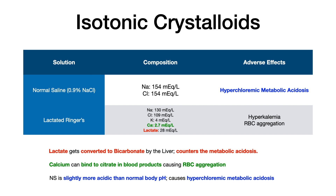In lactated ringers, the lactate actually gets converted to bicarbonate by the liver. So it's nice because it doesn't have as large a risk of causing metabolic acidosis, since the bicarbonate essentially acts as a buffer. However, something to keep in mind is that because you do that conversion from lactate to bicarbonate in the liver, any patient with hepatic dysfunction will have accumulation of lactate. This can cause confusion in the interpretation of elevated lactate levels — the elevated lactate may not reflect an inherently elevated lactate level, but simply that the liver, due to disease or dysfunction, was unable to metabolize the lactate into bicarbonate.